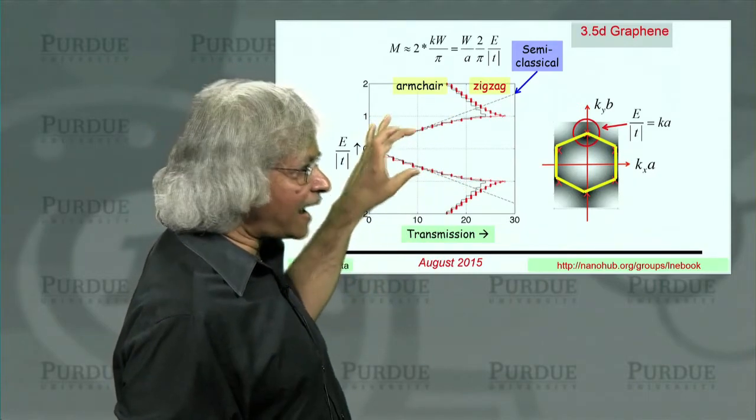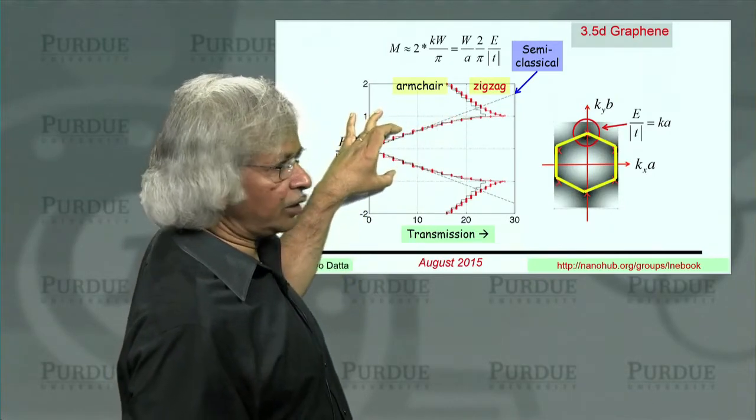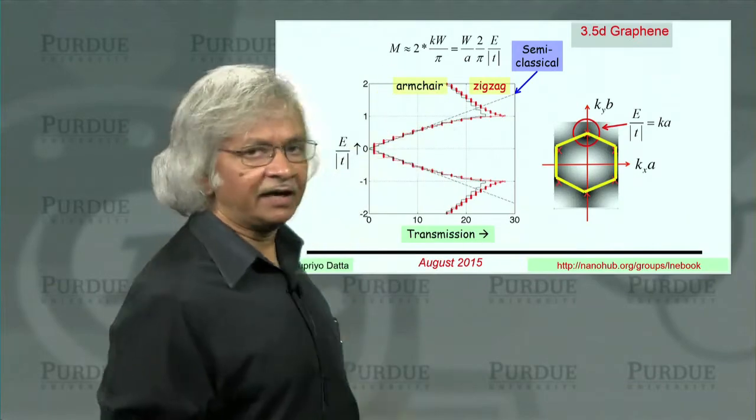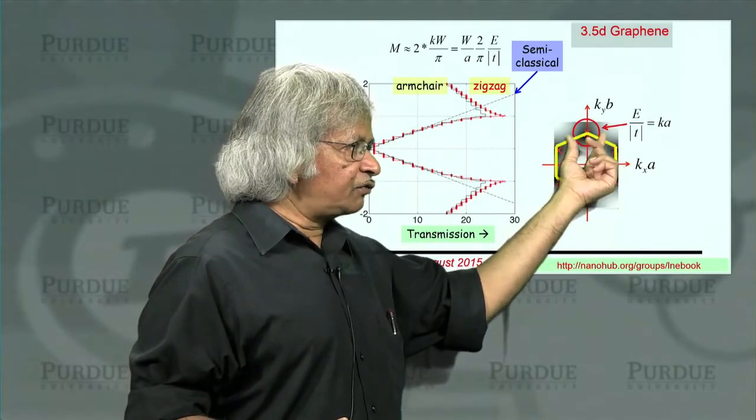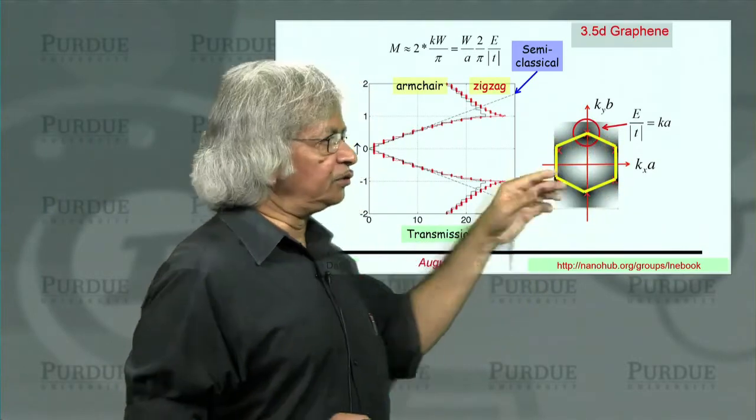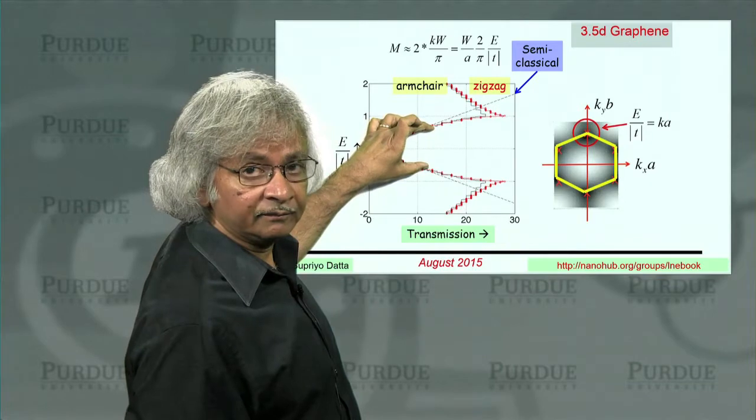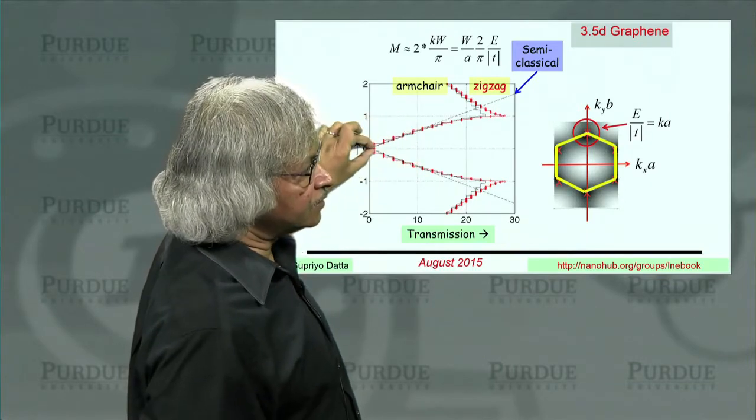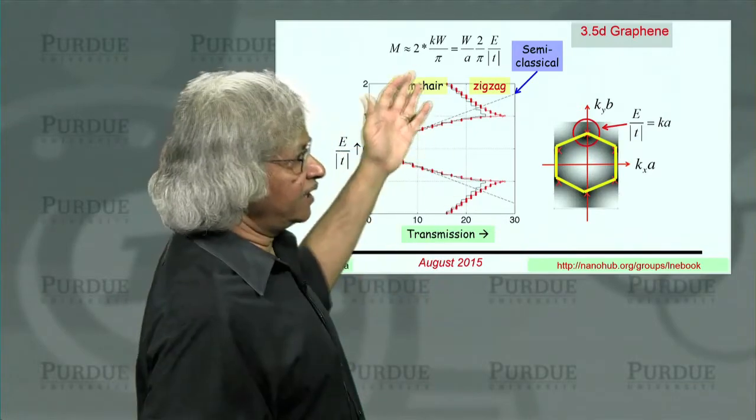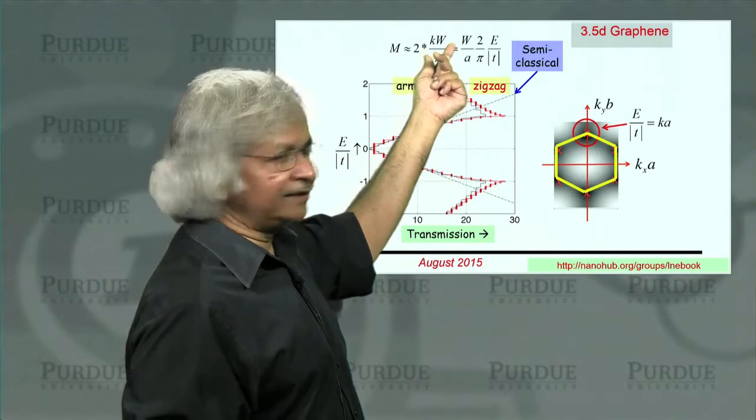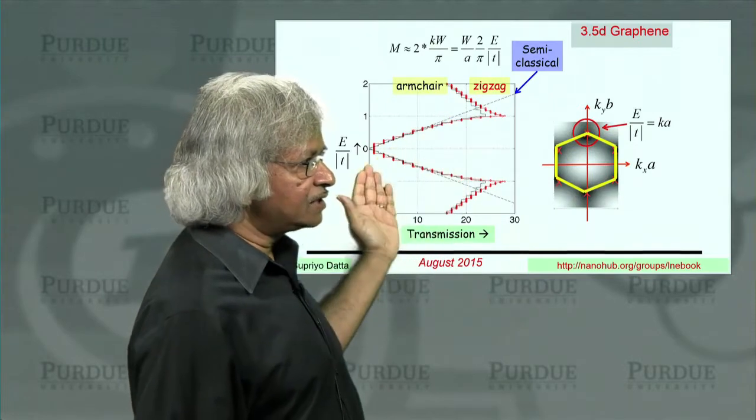And you can kind of see that the actual result follows that straight line roughly, at least at low energies. And we don't expect it to fit at high energies anyway because this dispersion relation only holds for small energies around that valley. So you don't really expect it to hold out here. But the interesting point is, until here, it holds quite well. This straight line. And of course, what the straight line isn't showing is all these steps because the straight line is assuming, treating this just as a number, not taking its integer value or anything. So you don't expect the steps. You just get the straight lines.